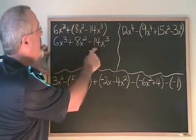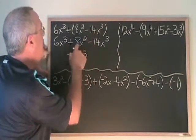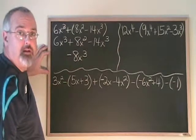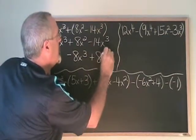6x³ minus 14x³ is negative 8x³. And then the plus 8x² is not a similar term with the others, so we keep it. We're done.